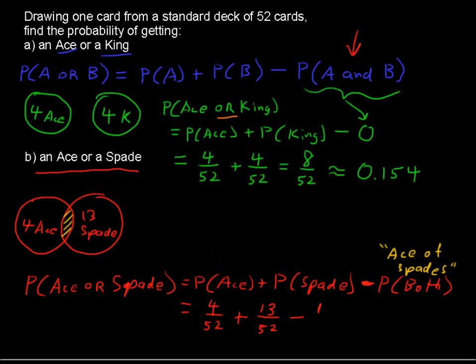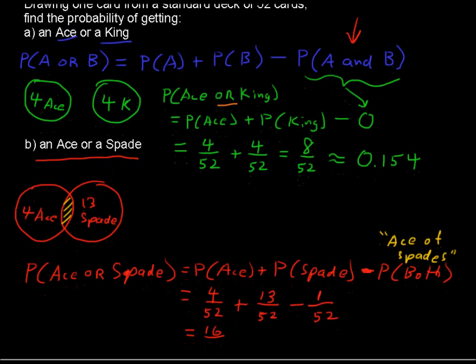That one card, we don't want to count it twice. We've counted it with the aces and the spades, so we'll subtract one of those that we counted, 1 out of 52. And that equals 16 out of 52, which is approximately equal to 0.308, if you are putting this into a decimal notation.